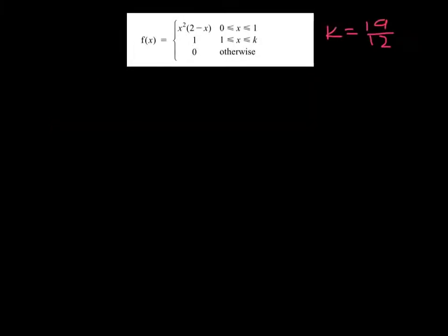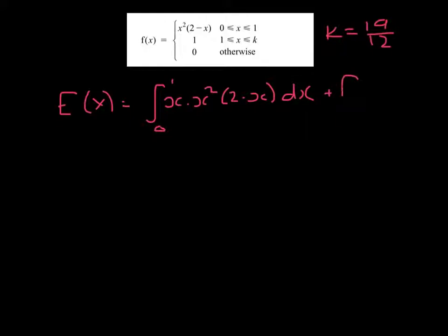Part 2, we're asked to find E of x, and E of x is the integral of x times the function. So in this case, x times x squared upon 2 minus x, between 0 and 1, plus the integral from 1 to k, which is 19 twelfths, of x times 1 with respect to x.